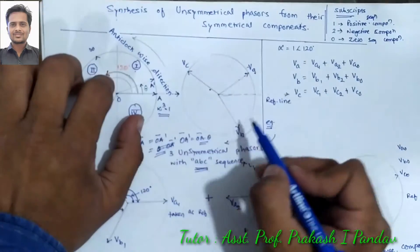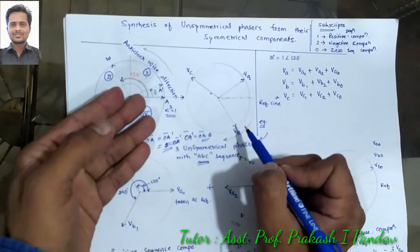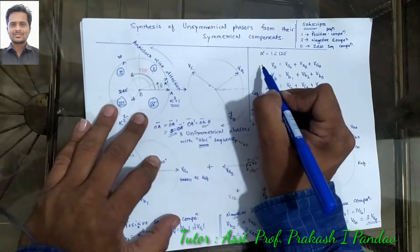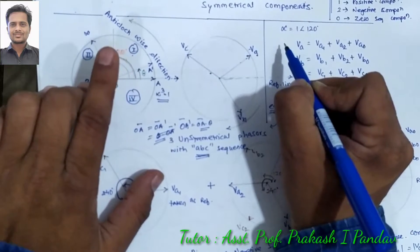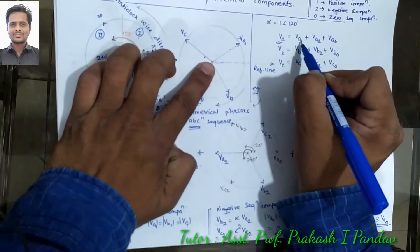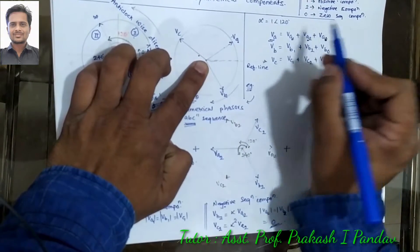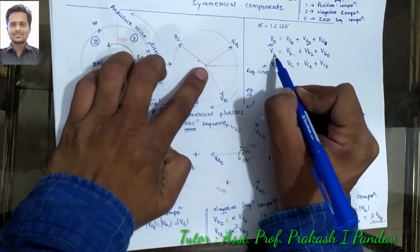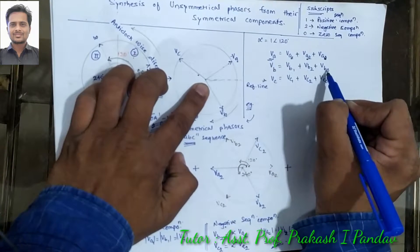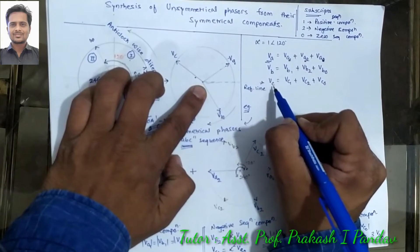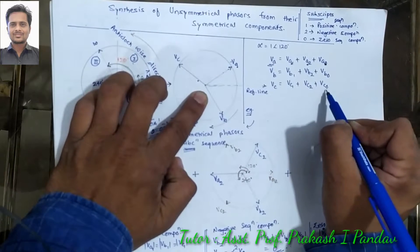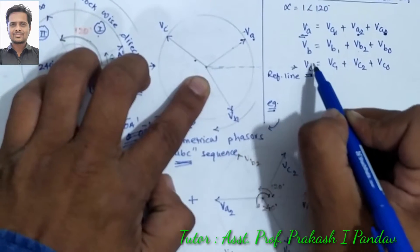We calculate degrees in electrical in the anticlockwise direction. Now, if we calculate the unsymmetrical phasor voltage for phase A, VA equals the summation of its positive sequence, negative sequence, and zero sequence components. Same for B phase: VB equals positive sequence plus negative sequence plus zero sequence voltage. Same for C phase: VC equals positive sequence plus negative sequence plus zero sequence voltage.